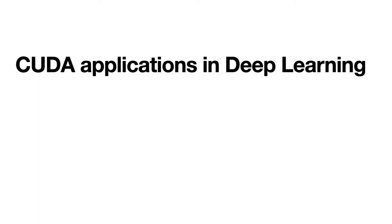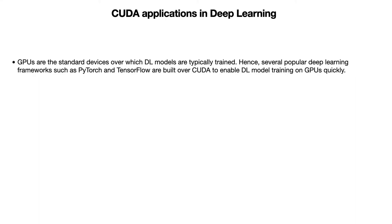Here we are going to discuss the applications of CUDA in deep learning. GPUs are the standard devices over which deep learning models are typically trained. Hence, several popular deep learning frameworks such as PyTorch and TensorFlow are built over CUDA to enable DL model training on GPUs efficiently and quickly.